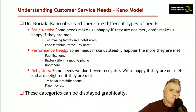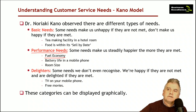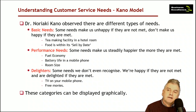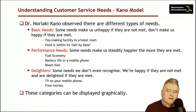The second type is what's known as a performance need. The way it works is: the more you can give me, the more you're willing to pay for it. Think of a car with greater fuel economy — the more fuel economy, the more you're willing to pay. A phone with a longer battery life, or room size in a hotel — the bigger, the more you'll pay. But the corollary is also important: poor fuel economy or poor battery life means you're not willing to spend much.